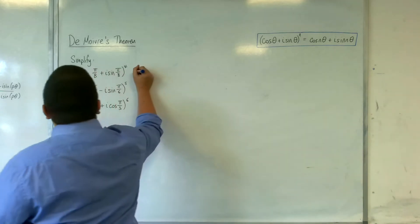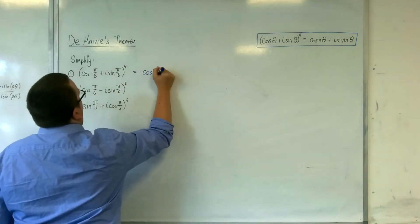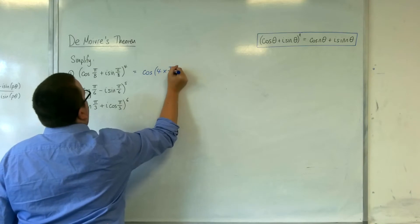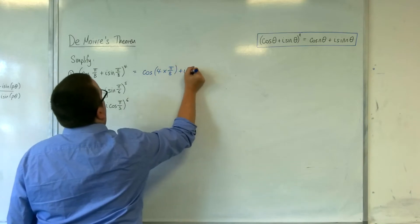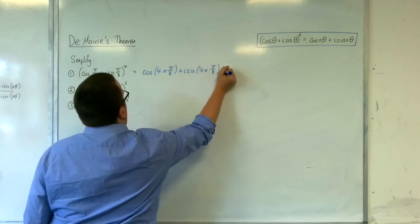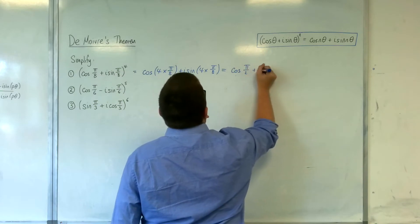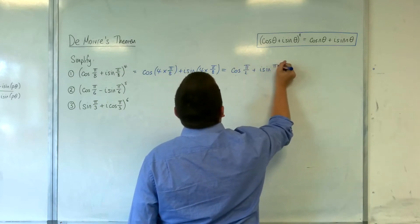What you can do is just bring that 4 in and you'll have cosine of 4 lots of π over 8 plus i sine of 4 lots of π over 8. So that's cosine of π over 2 plus i sine π over 2.